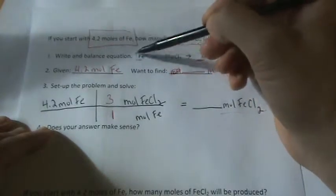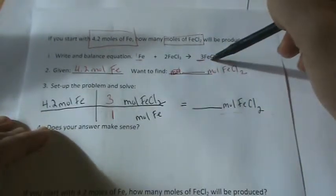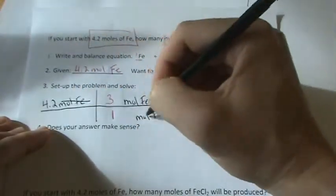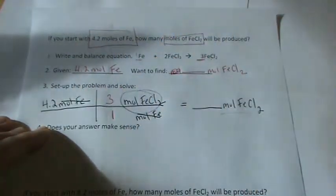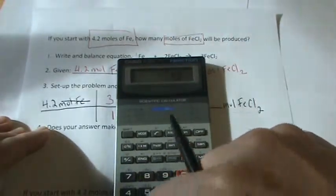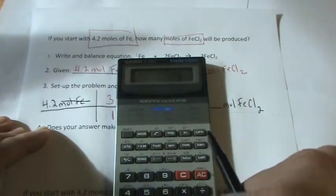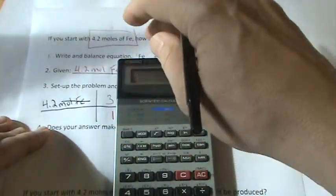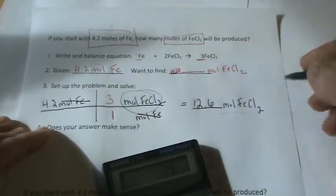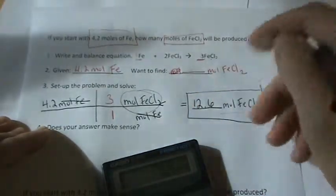Basically, for every 1 mole of this, I'll need 3 moles of FeCl2. We can cancel out moles of Fe. That'll leave us with that. Let's do the math. 4.2 times 3 equals 12.6 divided by 1, so 12.6 moles of FeCl2. That's my final answer there.